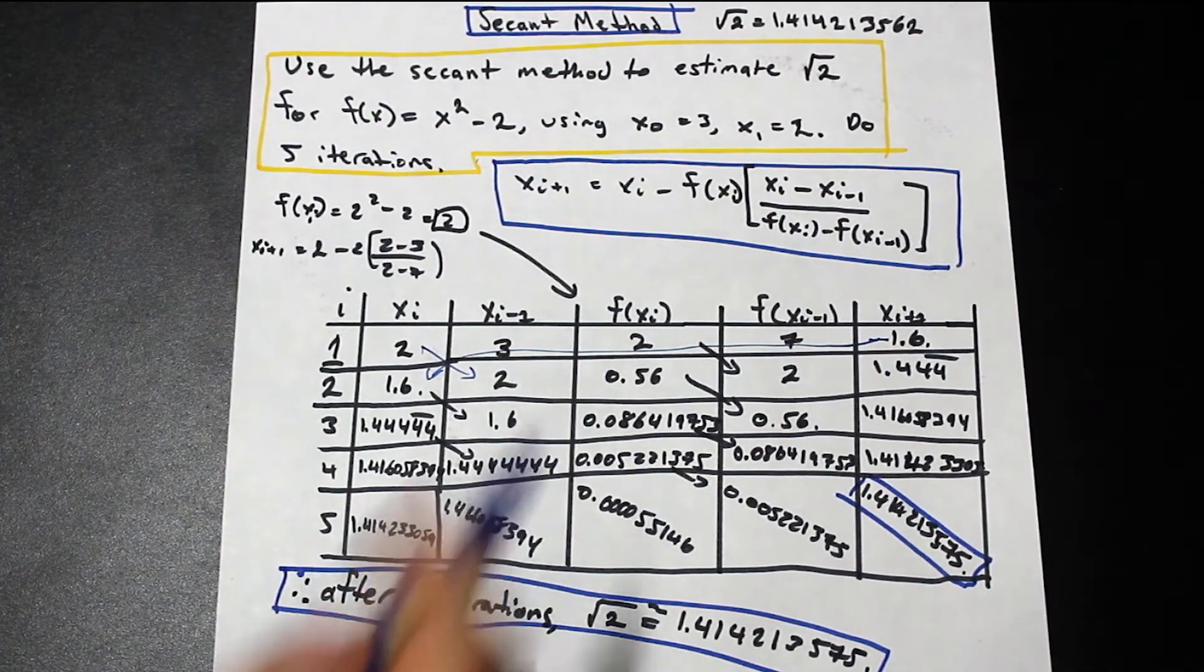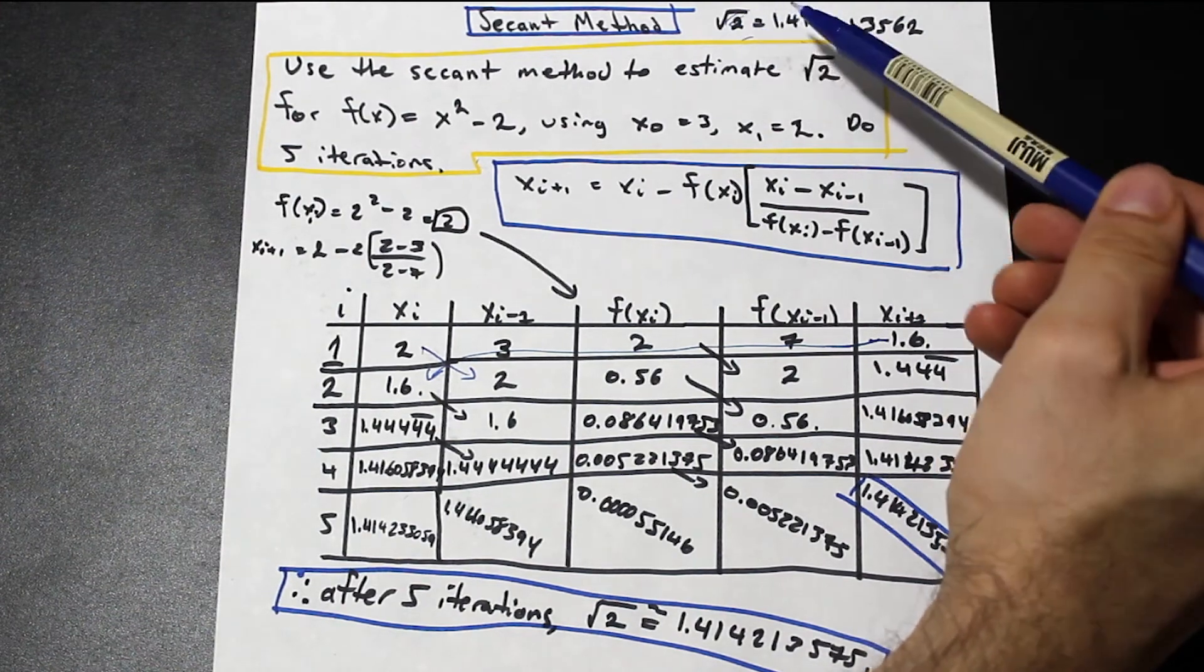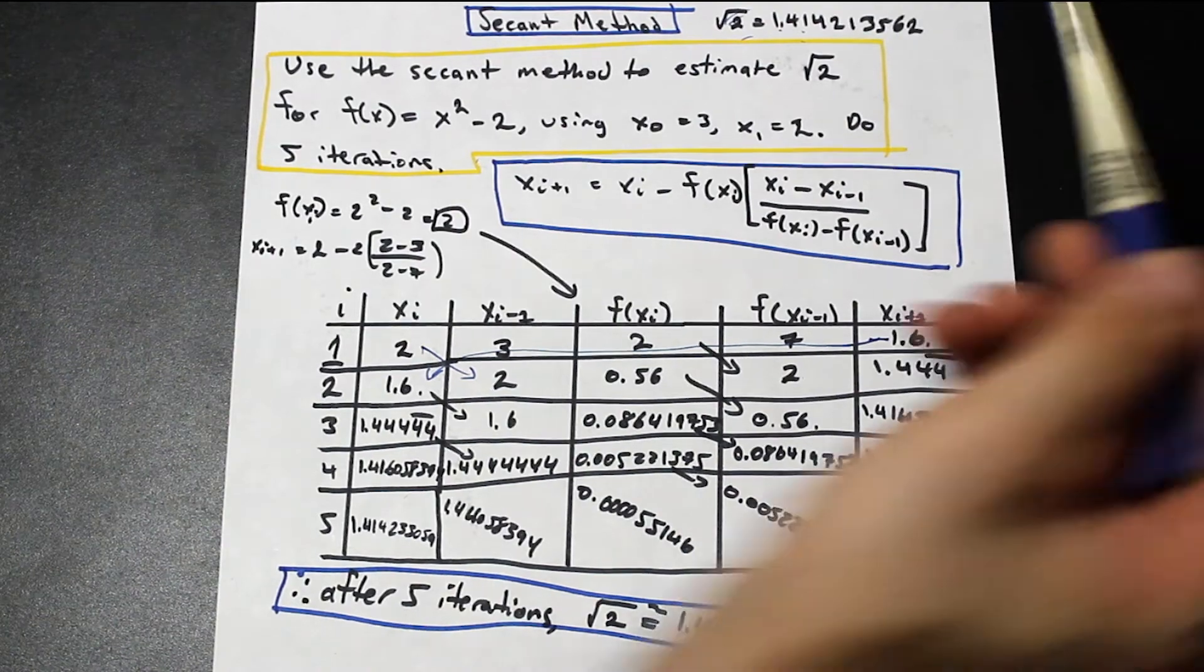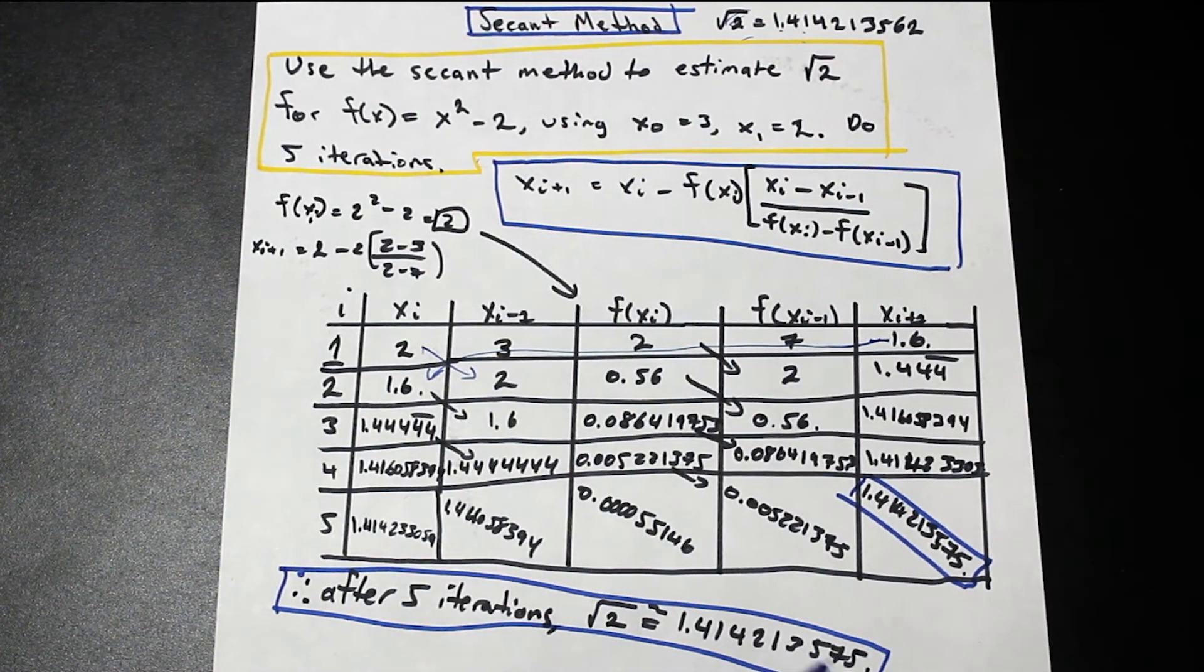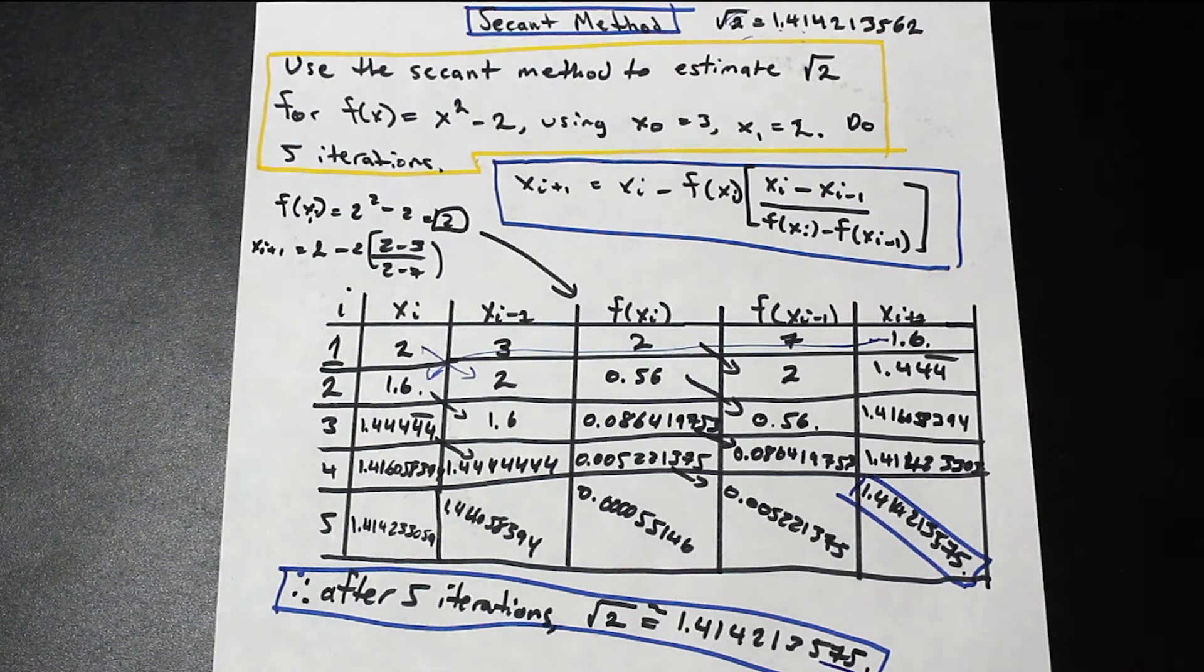And as you can see, it's fairly close actually to the exact value of root 2. We have 4142135, and then it starts to get different on these last two digits. But the first seven decimals are the same. So after five iterations, that's pretty good.